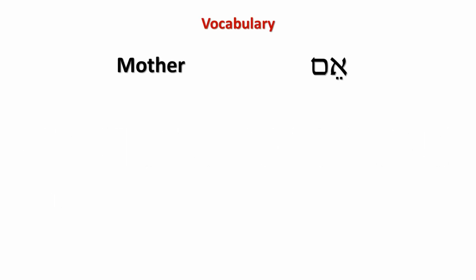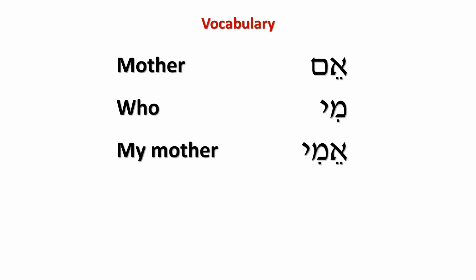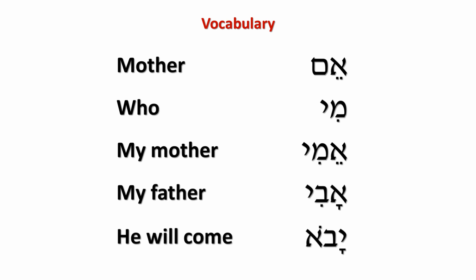Here are our new vocabulary words: aim means 'mother'; mi means 'who'; imi means 'my mother'; avi means 'my father'; yavo means 'he comes' or 'he will come.'